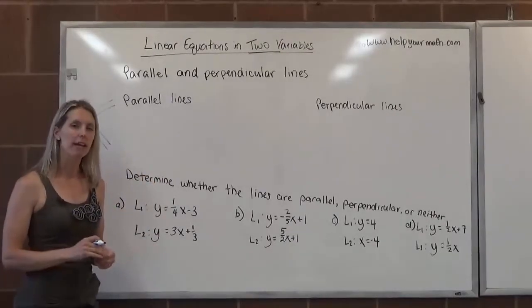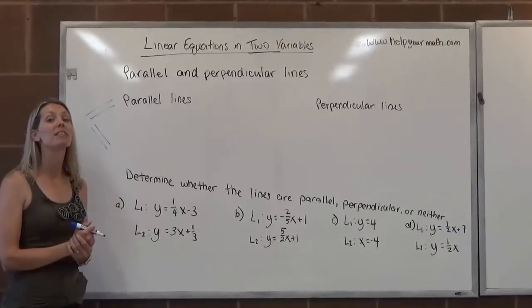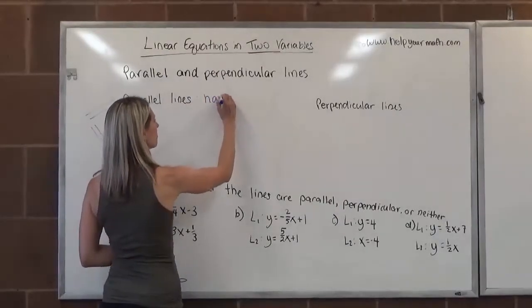How can we recognize if two lines are going to be parallel if we're given their equations? Well, parallel lines would have the same slope.